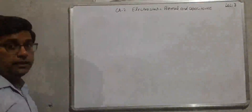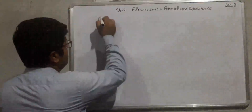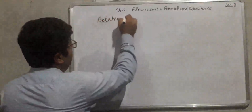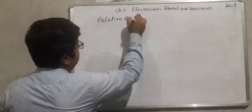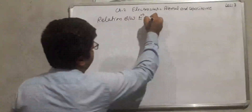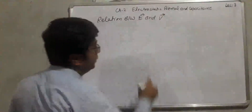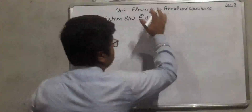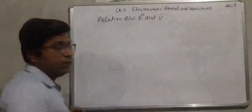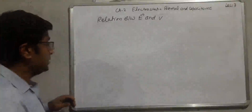Let's start the relation between E and V. It's a scalar quantity — the relation between electric field and potential.